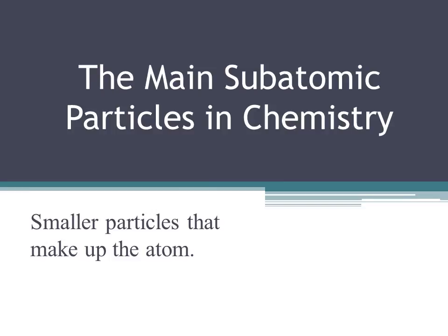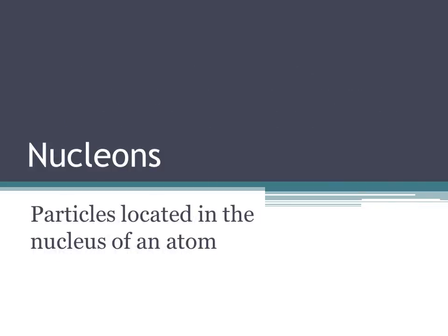The mass of an atom expressed in atomic mass units is called the atomic mass of the atom. Now let's talk about the particles that make up atoms. Particles that are smaller than the atom are called subatomic particles. The three main subatomic particles that form an atom are protons, neutrons, and electrons. The center of the atom is called the nucleus, and any particle found inside the nucleus is called a nucleon.